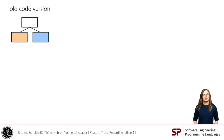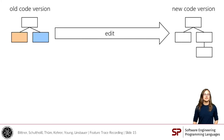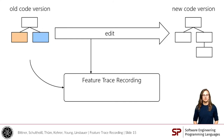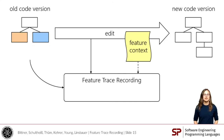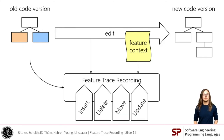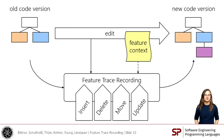In general, we look at the structure of source code to maintain syntactic correctness of Feature Traces, and when developers edit source code, we get a new version of the structure. For Feature Trace Recording, we take the old version of the source code, the edit itself, and optionally the Feature Context as input. Depending on the edit being an insertion, deletion, move, or update, we derive Feature Traces for the new version of the source code.